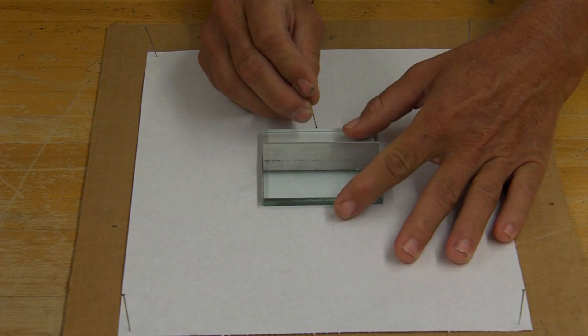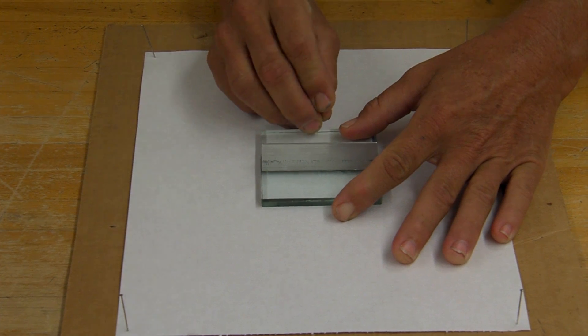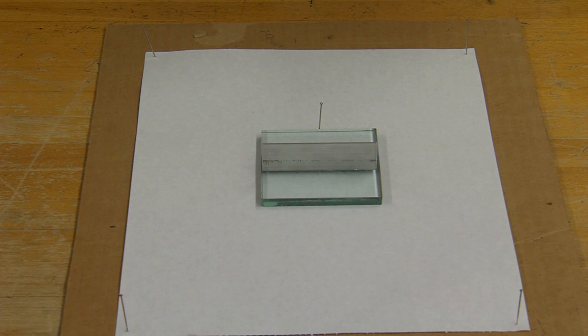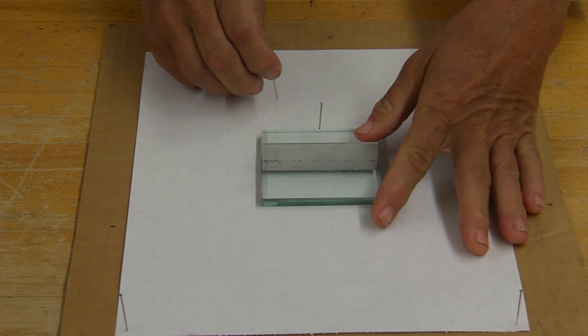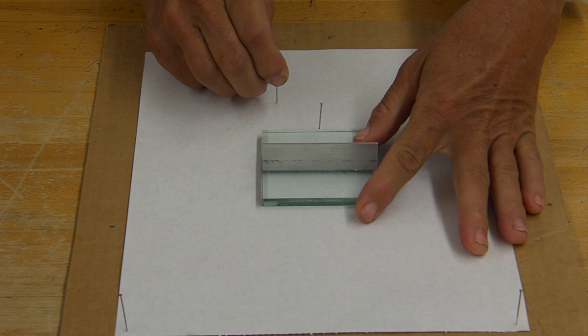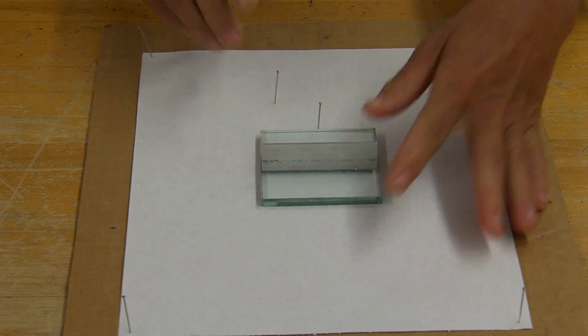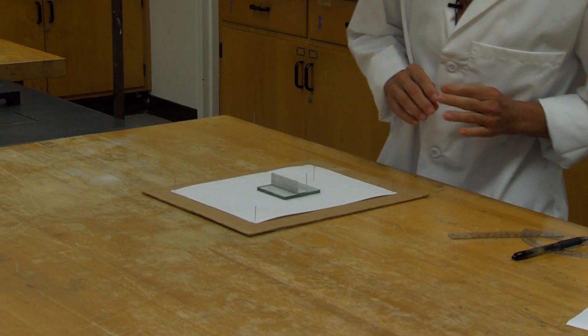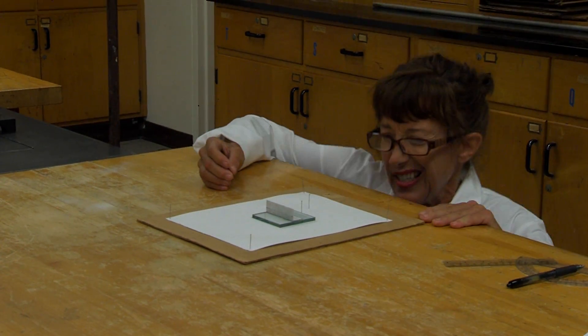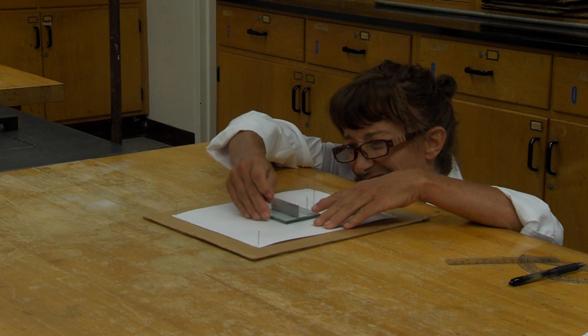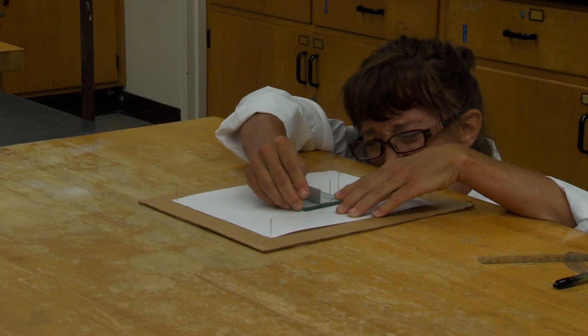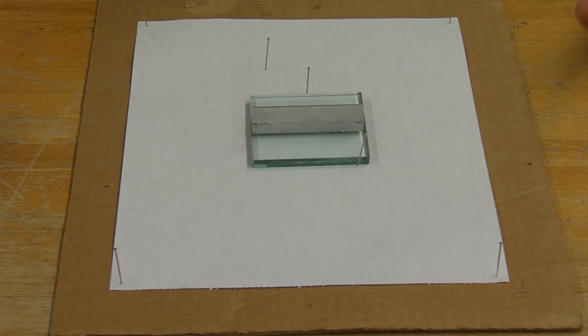You will place a pin to indicate your normal. Then you will place a pin at some arbitrary angle indicating your incident angle. Now, you need to peer through the glass, get the pins aligned, and drag this so that all three pins appear to be in alignment with each other.